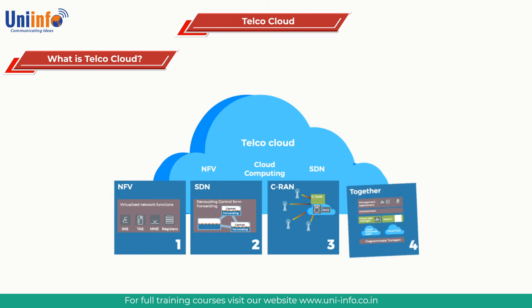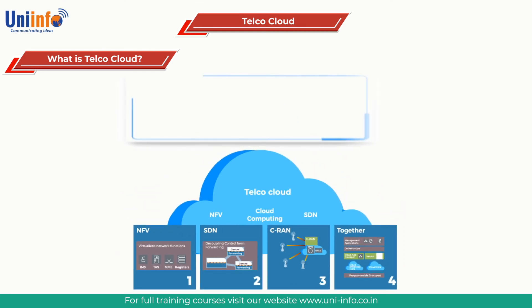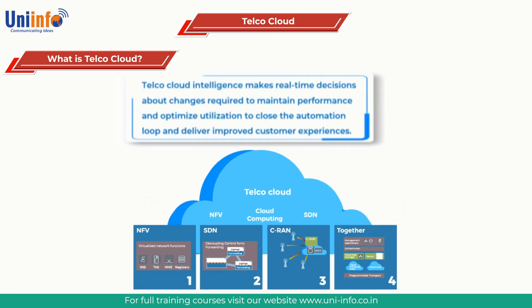With a flexible software foundation and automation platform in place, the last layer of Telco Cloud is the Intelligence layer. This layer is chartered with service assurance and root cause analysis. By processing streamed and normalized data from an end-to-end network, this layer creates dynamic network control as it continuously monitors and reacts to changing network conditions. Telco Cloud Intelligence makes real-time decisions about changes required to maintain performance and optimize utilization to close the automation loop and deliver improved customer experiences.